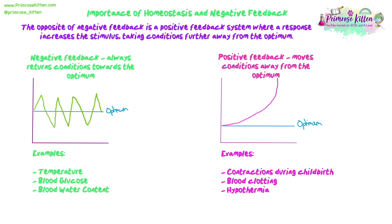Negative feedback examples include temperature, blood glucose, and blood water content. Positive feedback examples are rarer. Contractions during childbirth: the baby's head pushing on the cervix causes release of oxytocin, which causes contractions; the contractions cause the baby to push more, releasing more oxytocin, going round and round with more contractions until the baby is born. Blood clotting: if a few cells send out the signal to clot, more cells are stimulated to send out more blood clotting factors, increasing and increasing until the blood clot is formed.